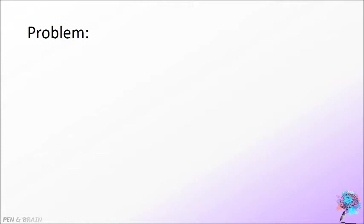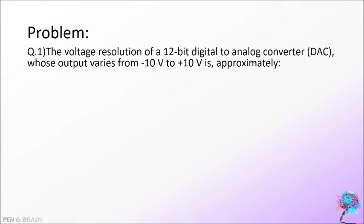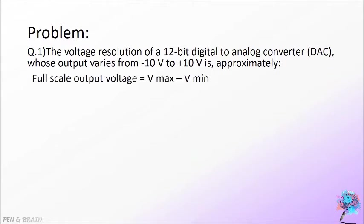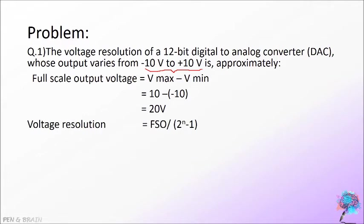Let's solve a problem from GATE 2010. The voltage resolution of a 12-bit digital-to-analog converter whose output varies from minus 10 volt to plus 10 volt is approximately. Full scale output voltage equals V maximum minus V minimum, which is plus 10 minus minus 10, giving 20 volt. Resolution equals full scale output voltage divided by 2 raised to N minus 1, where N equals 12. Substituting the values gives the answer 4.8 millivolt.